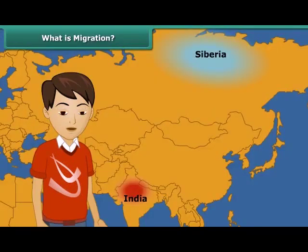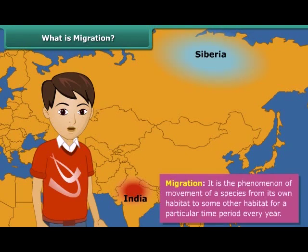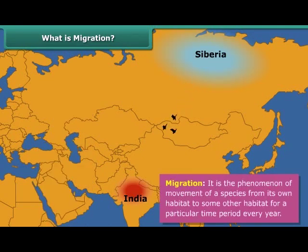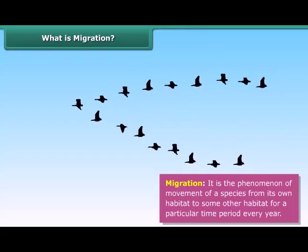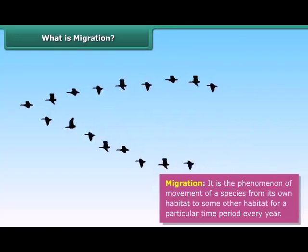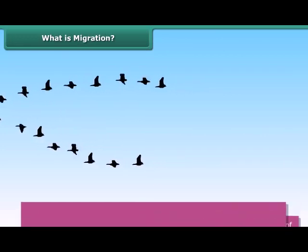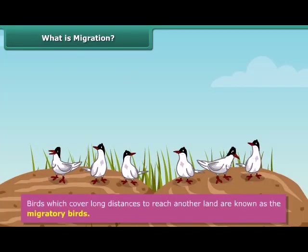Let us learn what the term migration means. Migration is the phenomenon of movement of a species from its own habitat to some other habitat for a particular time period every year, for a specific purpose like breeding or avoiding climatic conditions.